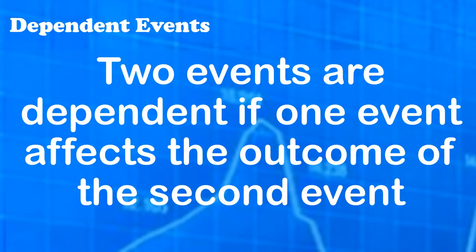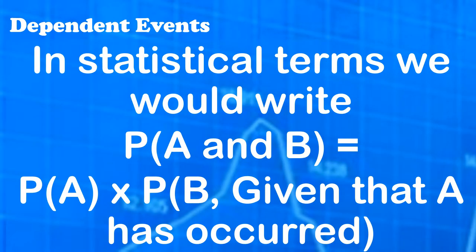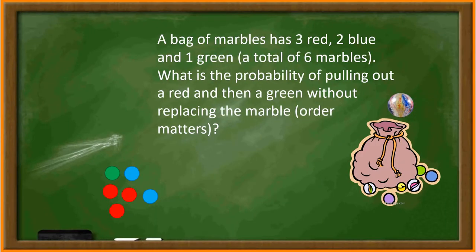Two events are dependent if one event affects the outcome of a second event. In statistical terms, we would write the probability of event A and B is equal to the probability of A times the probability of B given that A has occurred.